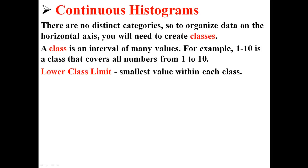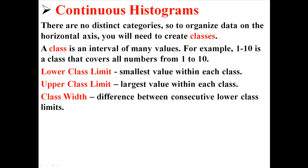A few definitions. The lower class limit is the smallest value within each class. The upper class limit is the largest value within each class. And the class width is the difference between consecutive lower class limits.